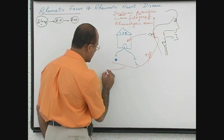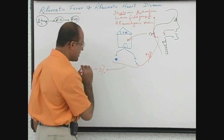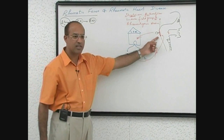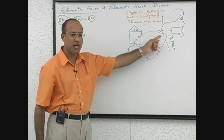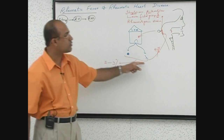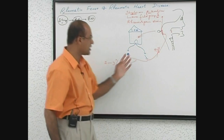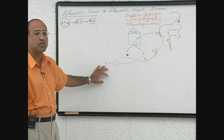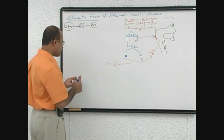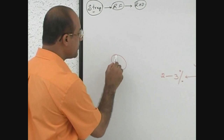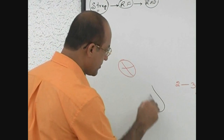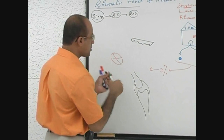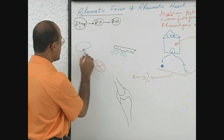In about 2 to 3% of patients there is a sad story. If there are 100 people with this infection, 97 to 98% are lucky because their immune response fires specifically back on the bacteria and destroys them. But unfortunately, in about 2 to 3% of the population, the immune system not only fires back on the bacteria — it also attacks our own tissue. It may attack cardiac tissue, joints (especially synovial joints), skin, subcutaneous tissue, and the central nervous system.